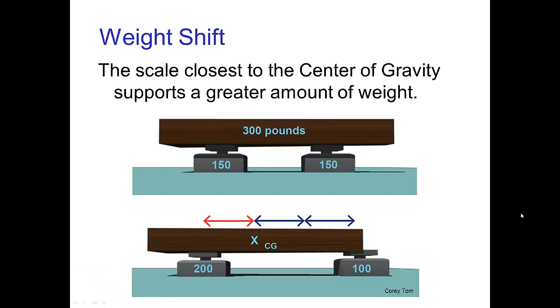Weight shift. If we have an object sitting on a pair of scales, the scale that's closest to the center of gravity is going to support more weight. We see that in this lower illustration, if the center of gravity is closer to the scale on the screen left, then that scale is bearing more of the weight compared to the scale on the right.